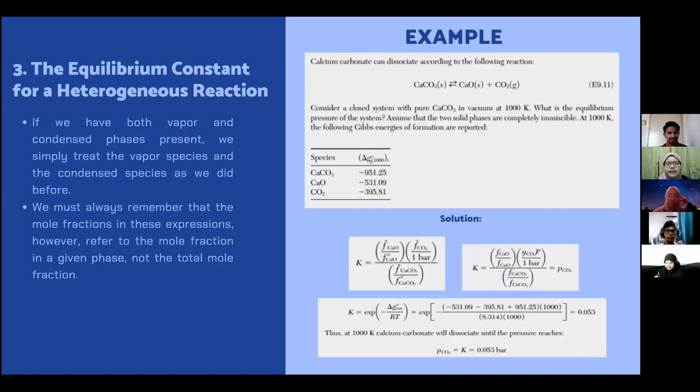Next, I will explain about the equilibrium constant for a heterogeneous reaction. As we know, heterogeneous reaction is a class of chemical reaction in which the reactants are components of two or more phases. If we have both vapor and condensed phase present, we simply treat the vapor species and the condensed species as we did before. We must always remember that the mole fraction in this expression, however, refer to the mole fraction in a given phase, not the total mole fraction. Let's move on to the example of the equilibrium constant for a heterogeneous reaction.